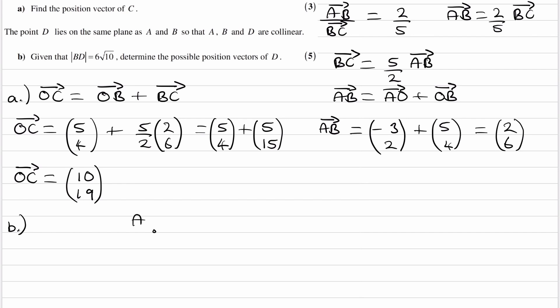Let's say this is A, this is B, there is a line that goes through A and B. If AB and D are collinear, that means D is somewhere along this line. And we're told that the magnitude of the vector BD is equal to 6√10.